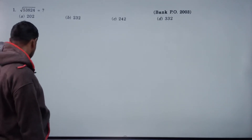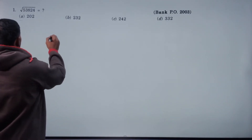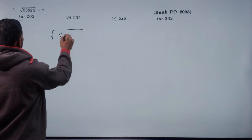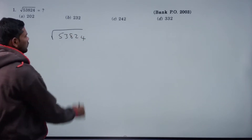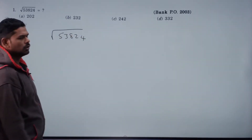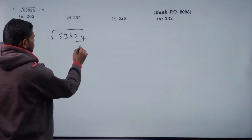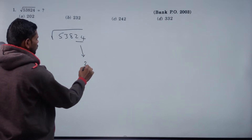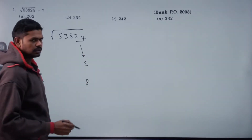Problems continue. Square root of 53824. In the last digit, units place 4 is either 2 squared or 8 squared.